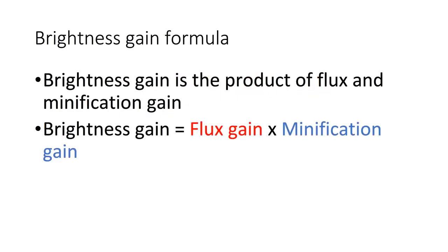Now that we know how to find flux gain and minification gain, the rest is very easy. Brightness gain is the product of the two. I just want to note that minification gain and flux gain are two separate processes.